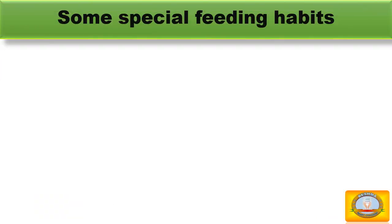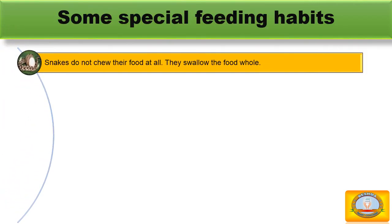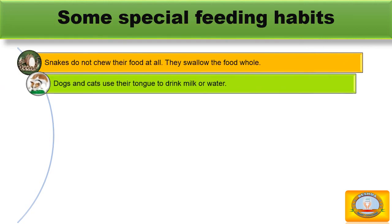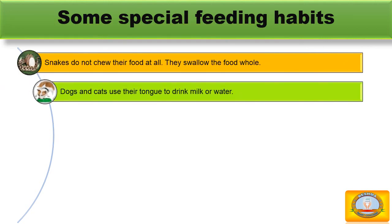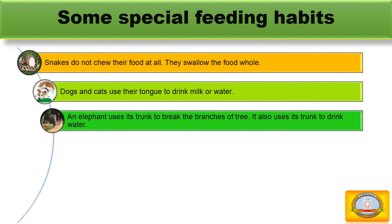Some special feeding habits of other animals. Snakes do not chew their food at all; they swallow the food whole. Dogs and cats use their tongue to drink milk or water. An elephant uses its trunk to break the branches of trees, and it also uses its trunk to drink water.